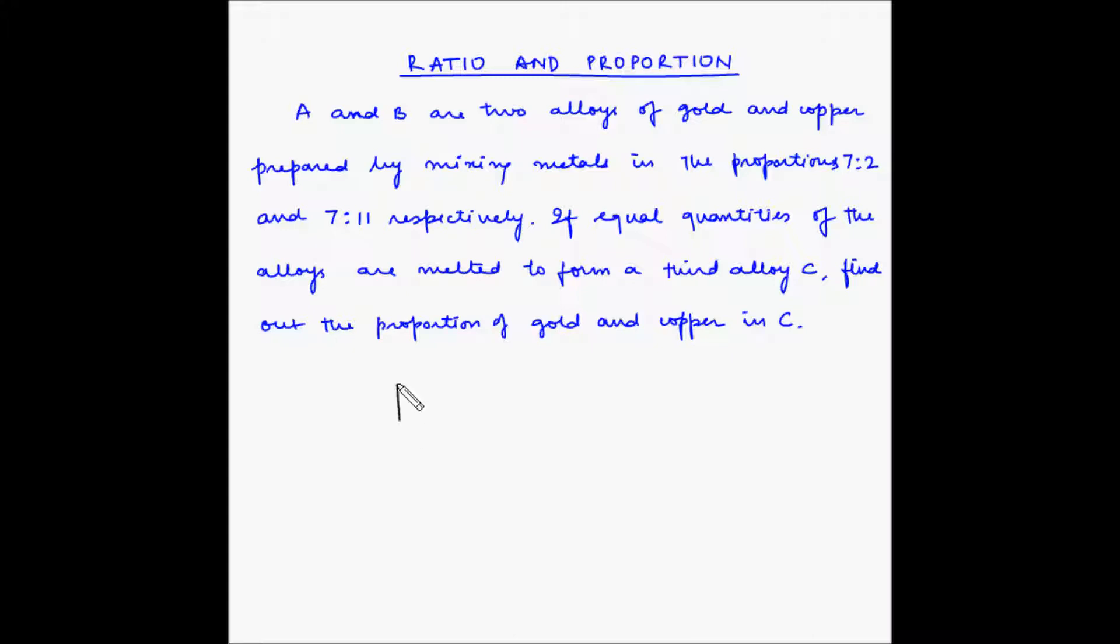Let us say this is one alloy A. A is made up of gold and copper. The ratio of gold and copper in A is given as 7 is to 2. This is gold, this is copper. So the ratio is 7 is to 2.